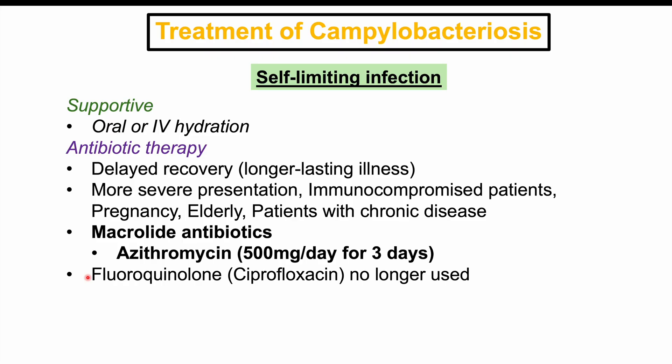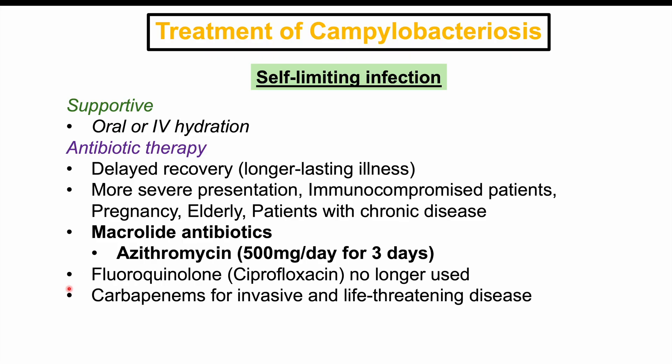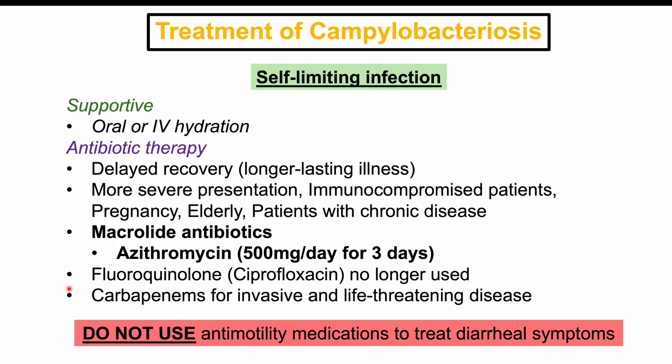Fluoroquinolones like ciprofloxacin used to be used in the past but are no longer used due to increasing resistance. In cases of invasive illness or worsening infection, carbapenems like imipenem or meropenem can be used — often a four to six week course for meningitis. It is important not to use anti-motility medications like loperamide to treat diarrheal symptoms of Campylobacter, as with Shigella and Salmonella infections. With Campylobacter especially, anti-motility medications can worsen severity of illness, prolong illness, and have caused fatalities in the past.